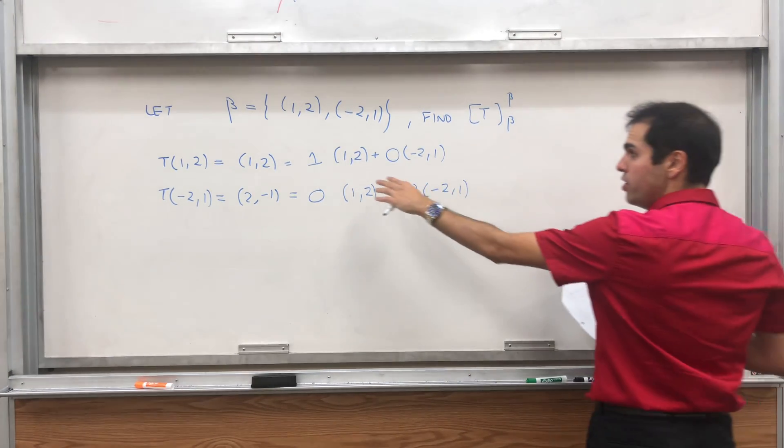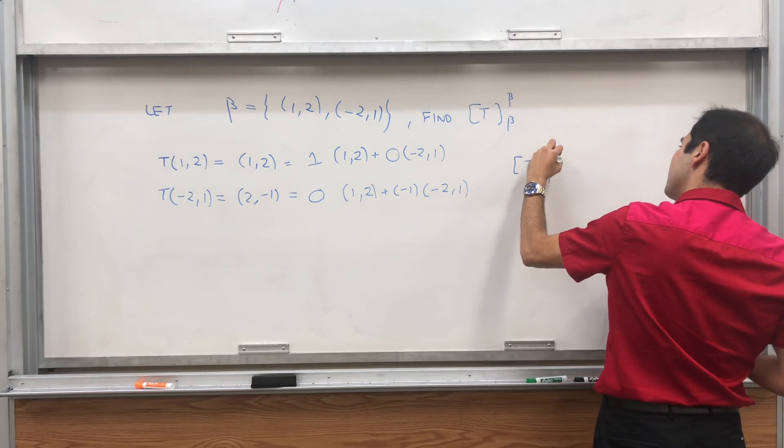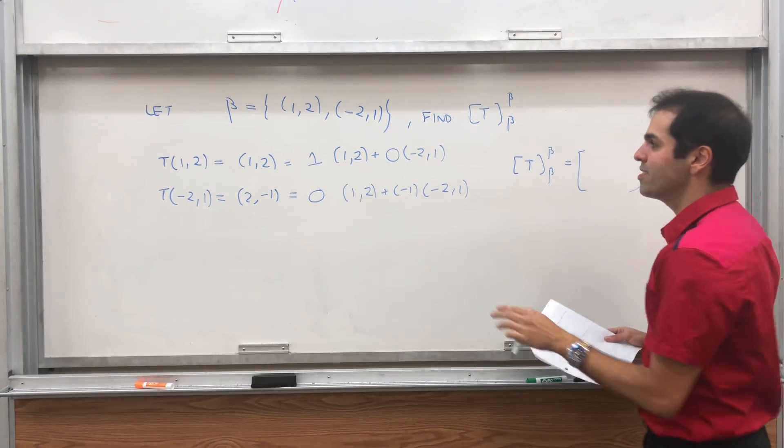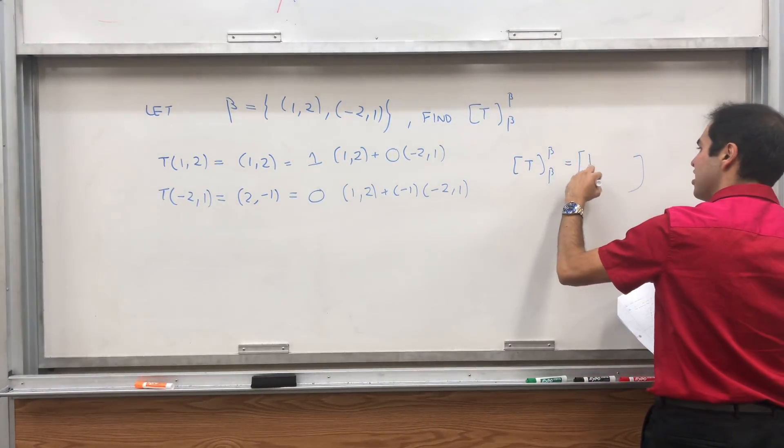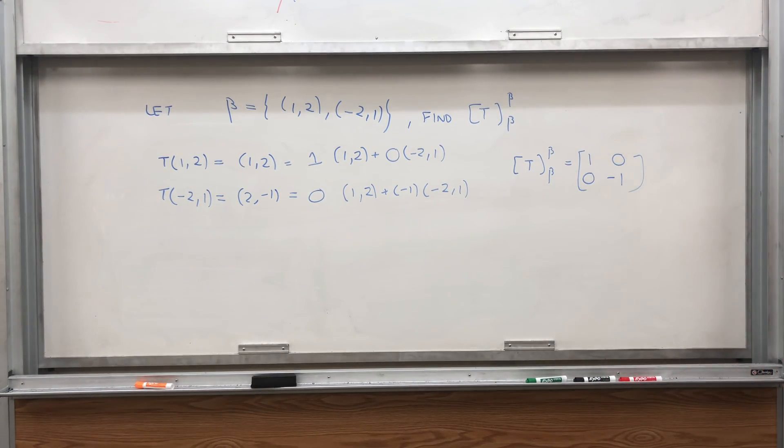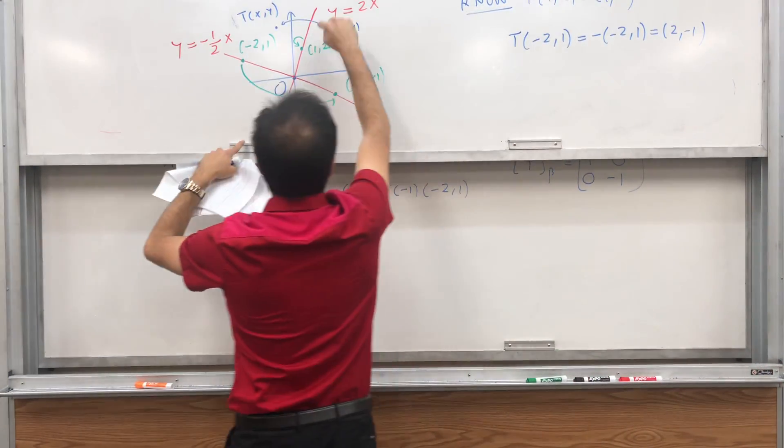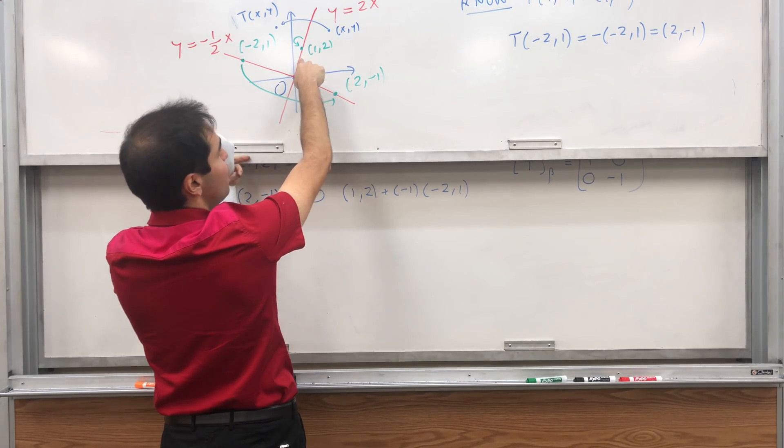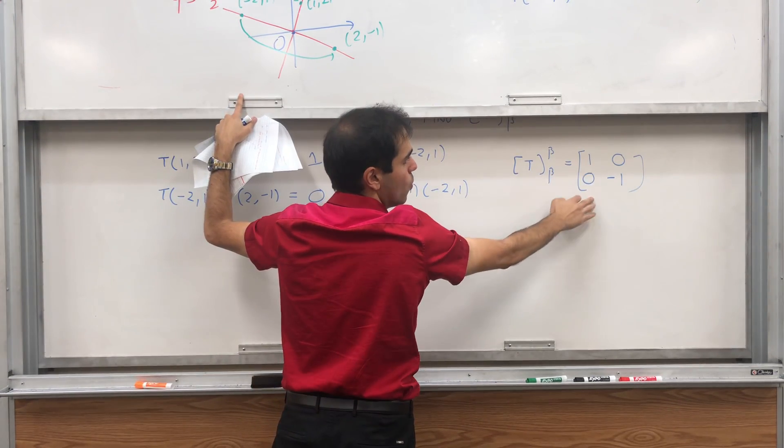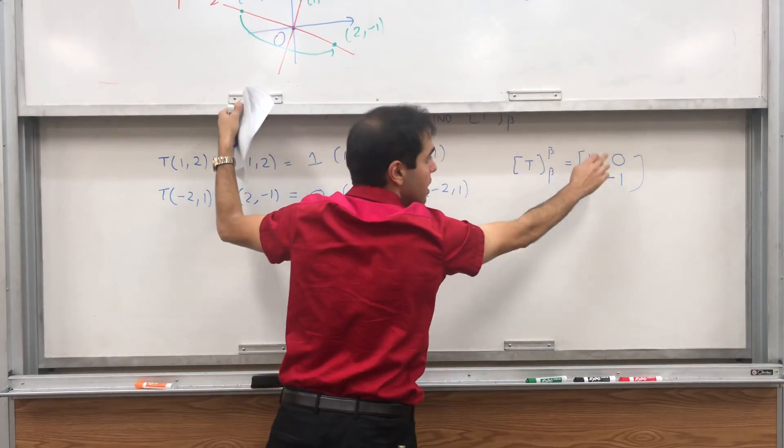And first of all, let's find a matrix of T with respect to that basis. And again, it's a basis because those vectors are linearly independent, so they're not multiples of each other. That's why I made sure to choose a new vector here, and it turns out they span your whole space, which is good. So how do you find a matrix of a linear transformation? You evaluate T at the old vectors, so T of (1,2) and T of (-2,1). We've just shown that T of (1,2) is (1,2), and T of (-2,1) is (2,-1).